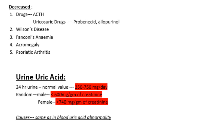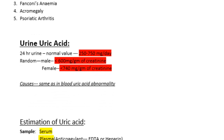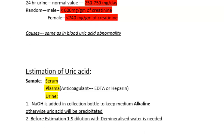Uric acid can also be measured in urine. The normal value in a 24-hour urine sample is 250 to 750 mg per day. In a random urine sample, it is less than 600 mg per gram of creatinine in males and less than 740 mg per gram of creatinine in females. The causes of increase or decrease are the same as for blood uric acid levels.